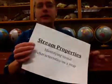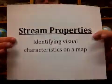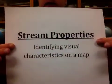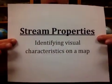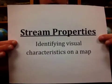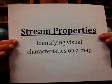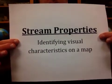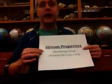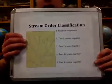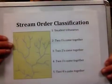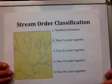Stream properties. In this video, we are going to look at some of the visual characteristics that you can identify about streams when looking at a map. The first one we are going to look at is stream order classification.